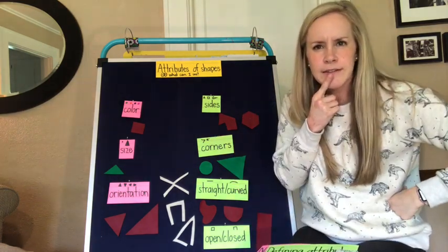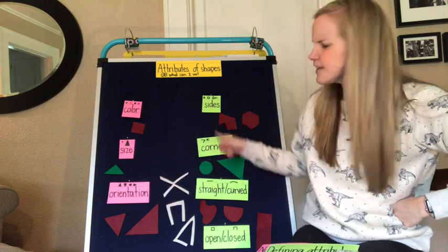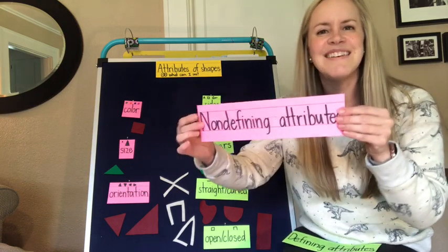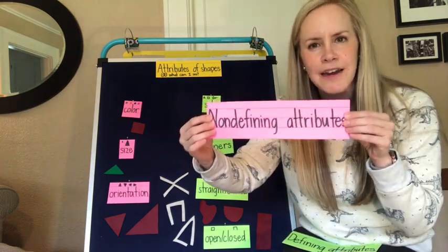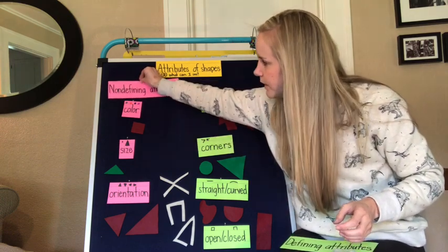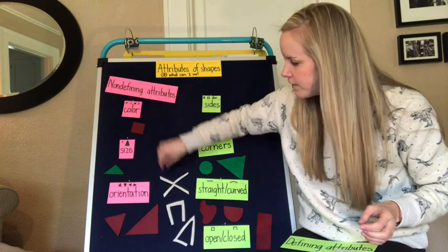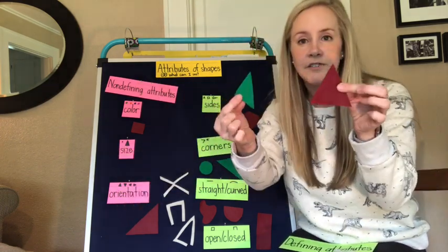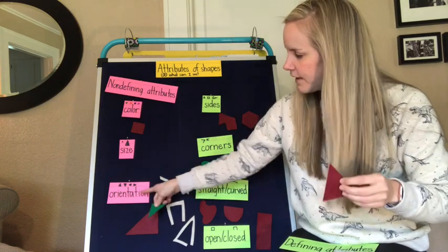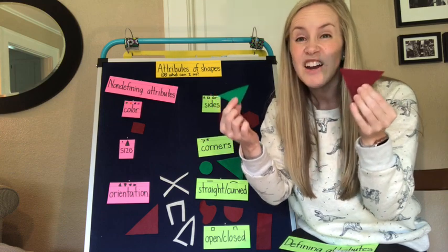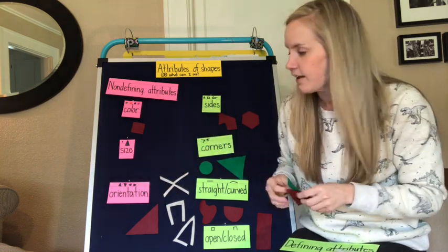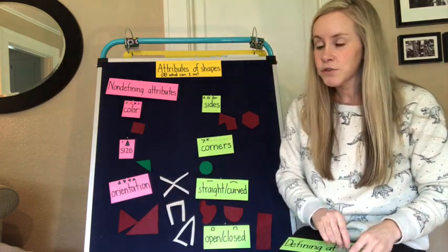Did you notice something about these? The pink shapes right here are called non-defining attributes — can you say that with me? Non-defining attributes: things like color, size, and orientation are attributes, but they don't make a shape a shape. For instance, these two are different colors but they are both triangles. They are different sizes but they are both triangles. And no matter what orientation I put them in, they are still triangles, so these are non-defining attributes.